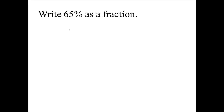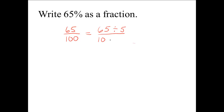Our first problem says to write 65 percent as a fraction. We will put 65 over 100. Now we can simplify 65 over 100. They have a common factor of 5 in the numerator and the denominator, so we can divide both the numerator and the denominator by 5. I can see this because the ones place in the numerator and denominator end in a 5 or a 0, which is the divisibility rule for 5.